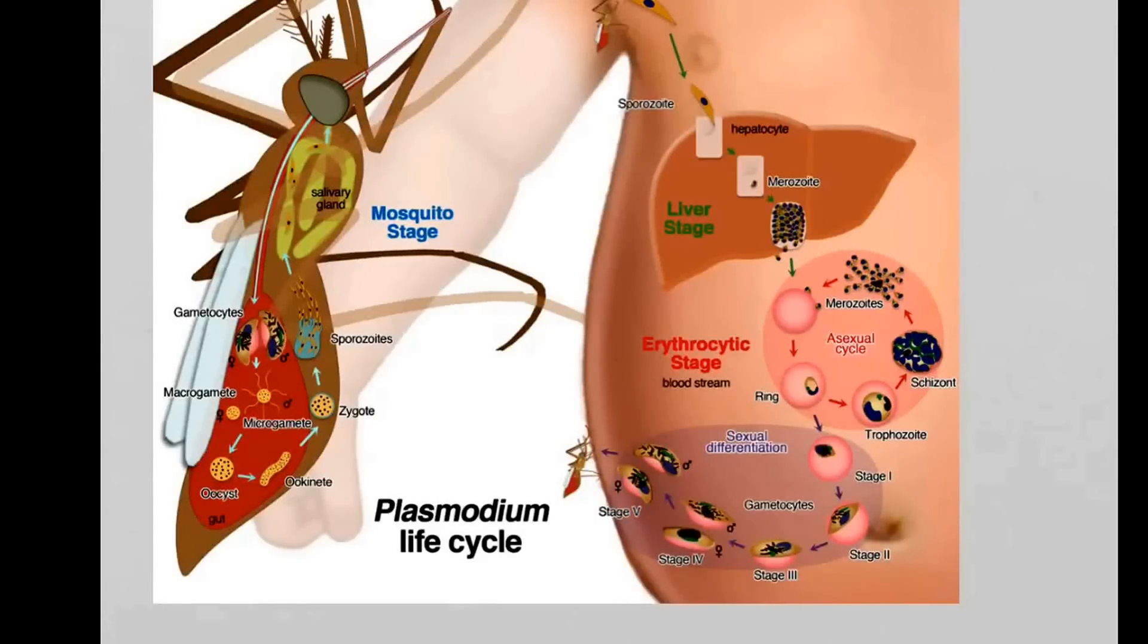Now they are sitting there; they can't do anything in the blood cells. They can't fuse together in the blood cells because for that to happen, they need the conditions which are only available in the mosquito gut.